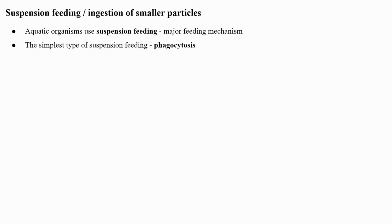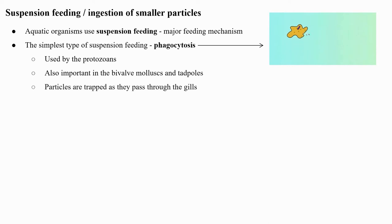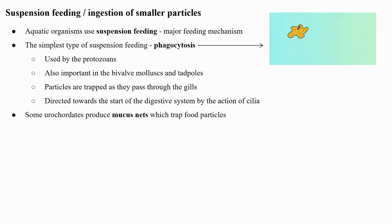Suspension feeding, or ingestion of smaller particles: aquatic organisms use suspension feeding as their major feeding mechanism. The simplest type of suspension feeding is phagocytosis, used by protozoans; this mechanism is also important in bivalve molluscs and tadpoles. Particles are trapped as they pass through the gills and are directed towards the start of the digestive system by the action of cilia. Some urochordates produce mucous nets which trap food particles.